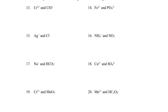Now, how to predict what formula we're going to have between two given ions. You should recall that you want the overall charge on an ionic compound to be zero — the positively charged cation and the negatively charged anion should balance out to zero. Looking at number 15: a silver ion with a plus one charge and a chloride ion with a minus one charge — the plus one and minus one balance out, so you only need one of each. The formula is AgCl. We don't put charges, and if there's no subscript, we assume it to be one.